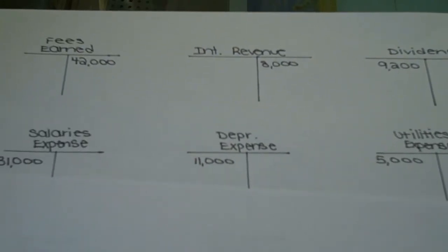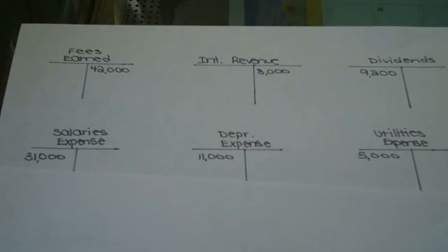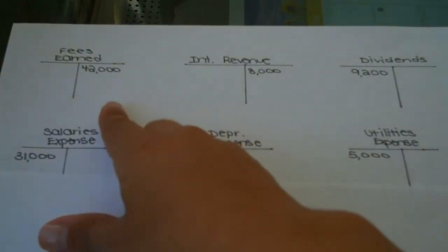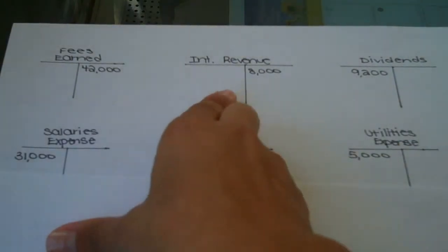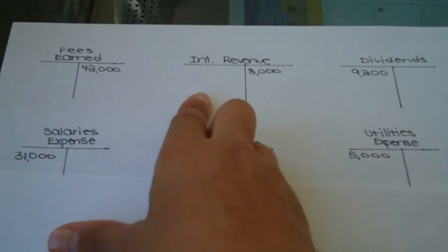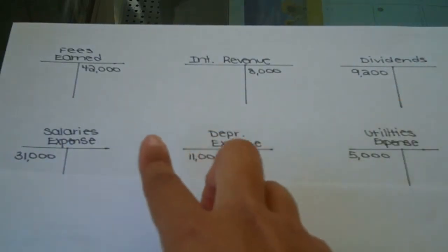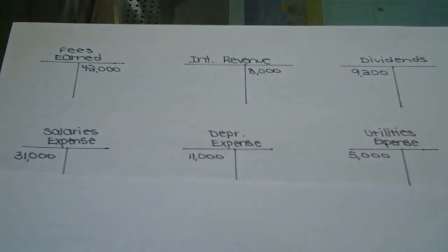I went ahead and did T accounts and put in the beginning balance as appropriate. If it was a credit account, as in the case of the revenues, I put it on the credit side. If it was a dividend or expense account, I put the beginning balance on the debit side.